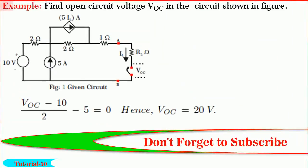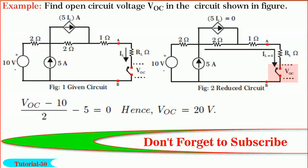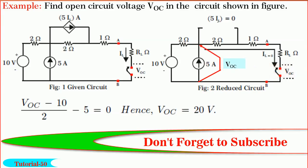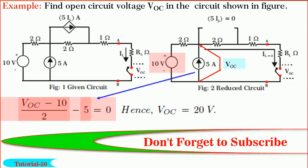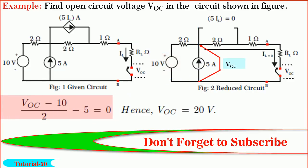Friends, next, we shall solve another interesting problem to find open circuit voltage VOC in the circuit shown in figure. Observe the network. The switch is open, then IL is equal to 0. So, current controlled current source of 5IL amperes will be 0. It is equivalent to open circuit. Because IL is equal to 0, no current will flow through 2 ohm, 1 ohm and RL. Hence, VOC appears across the current source of 5 amperes. By writing the nodal equation, we get VOC minus 10 divided by 2 minus 5 is equal to 0. So, by solving it, we get VOC is equal to 20 volts. It is so simple, isn't it?